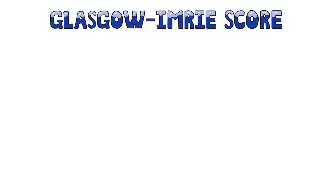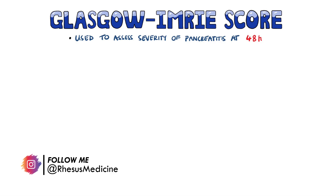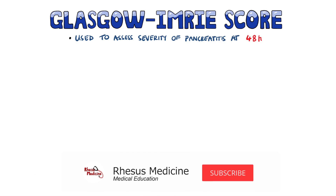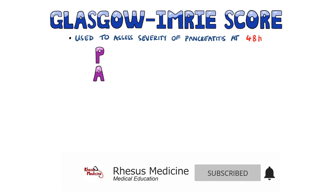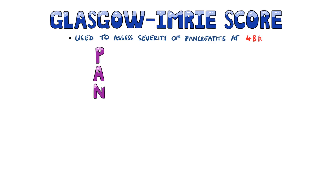The Glasgow Pancreatitis Score, known as the Glasgow Imrie Criteria, is a tool used to assess the severity of pancreatitis. It includes seven lab values that are routinely performed when a patient is admitted with abdominal pain, and is scored based on the values at 48 hours after admission.